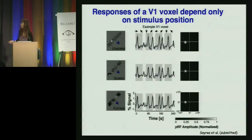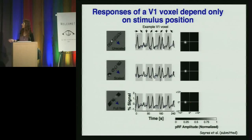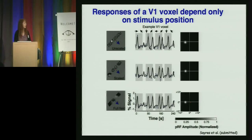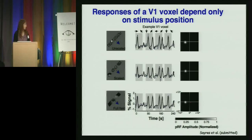We first measured V1. Each row shows one of the stimuli; the dotted line shows the response from the brain and the black line shows the fitted stimulus. V1 behaves like V1 should — it doesn't really care what kind of stimulus I'm showing, it only cares where in the visual field something is being shown. Consequently, we have the same responses across all three movies in V1 and we estimate very similar receptive fields for these different movies. Responses of the V1 voxel only depend on where we're showing stimuli in the visual field.